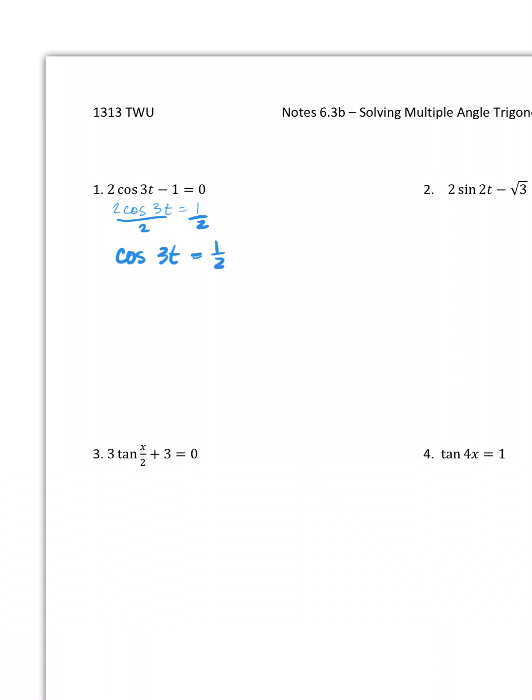So I'm going to have the cosine of 3t equals one half. Now is the time in which I need to find the angles that this represents. What I know is that those angles have a positive cosine, so that means they are in quadrant one and quadrant four, and the cosine is one half.